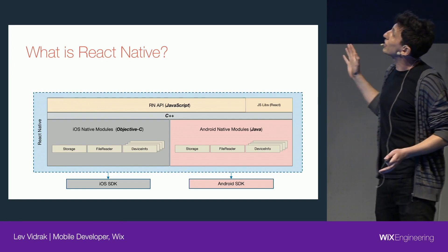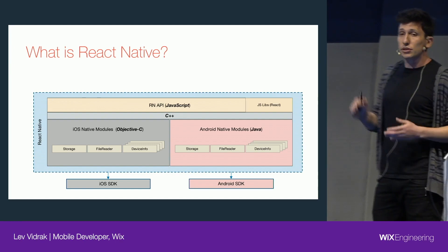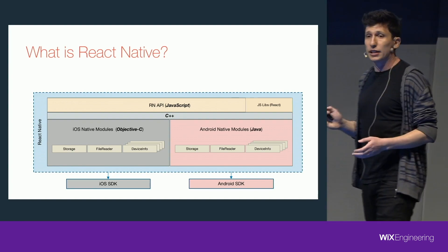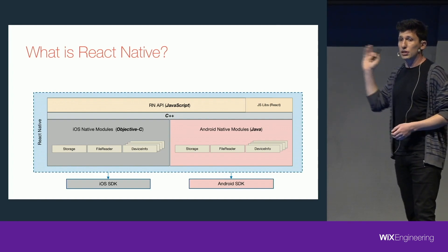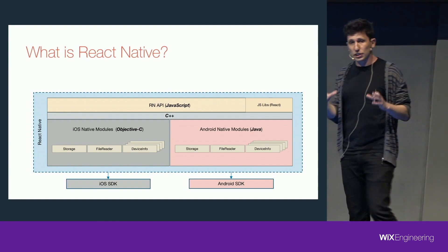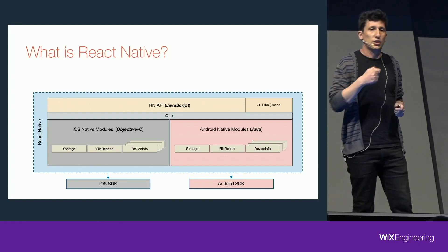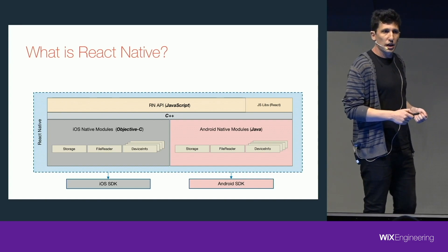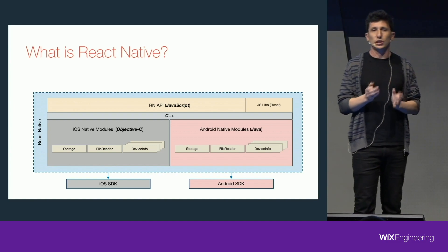This is the React Native framework. There are lots of stuff — let's break it. We can break it into two layers. The first layer is implemented in native: on the Android side with Java, and on the iOS side with Objective-C. This layer consists mostly of native modules that communicate with the Android SDK or with the iOS SDK, and they are supposed to implement some native functionality.